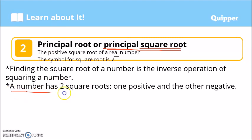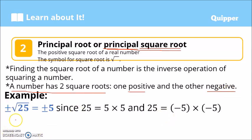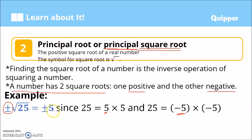First, bear in mind that a number has two square roots — one positive and one negative. For example, the square roots of 25 include both the positive and negative values. This is because 5 times 5 equals 25 (positive 5), and also negative 5 times negative 5 equals 25 (negative 5). So the square roots of 25 are positive 5 and negative 5.